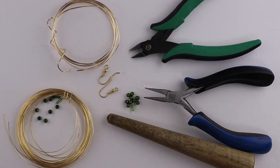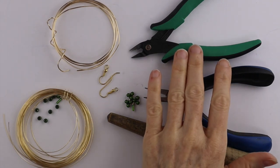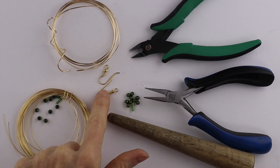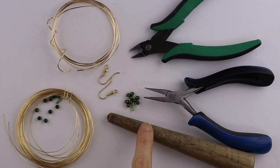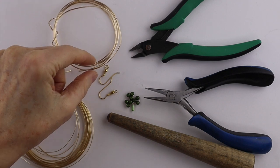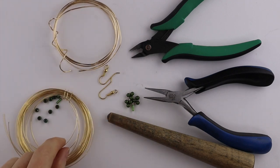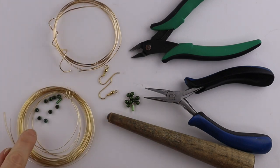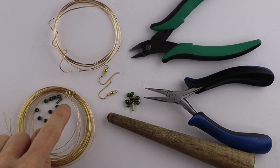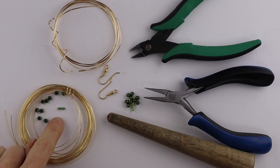What you're going to need for this project are your flat pliers, your cutters, earring hooks for the earrings or a ring cone for the ring. I have 18 gauge wire for the ring and for the shamrock we need 24 gauge wire. I have nine four millimeter round miracle beads and one tiny little bugle bead.